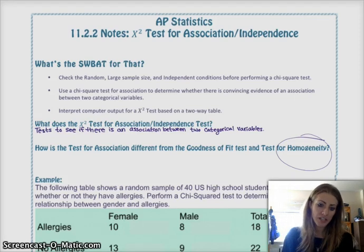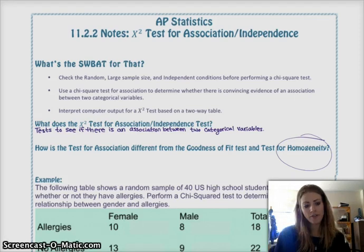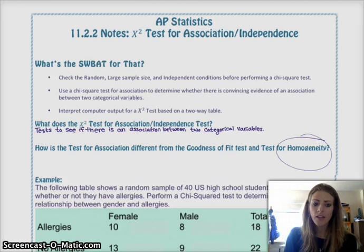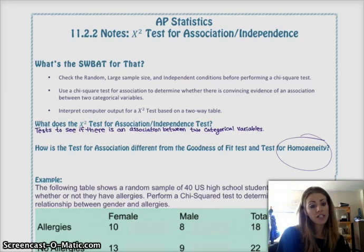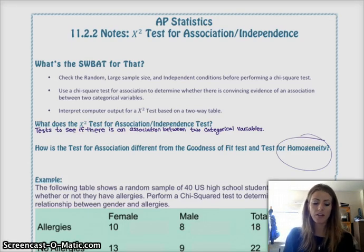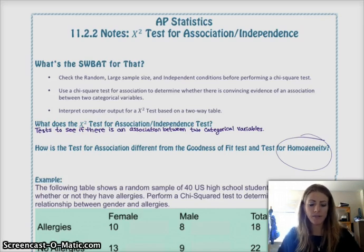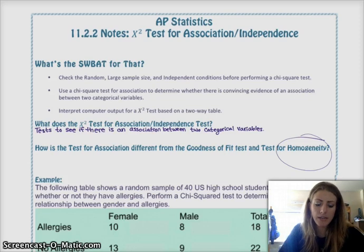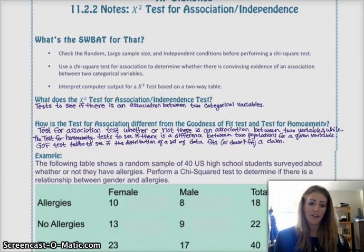But the difference between the association test and test for homogeneity is that for the homogeneity test you're looking at two different populations and one variable, and you're testing to see if the two populations are different or not, given that single categorical variable. And the test for association is different because it's generally two different variables that you're trying to see if there's a relationship between the two of them. Are they independent of one another, or is there an association between them? And so, that's the main difference.